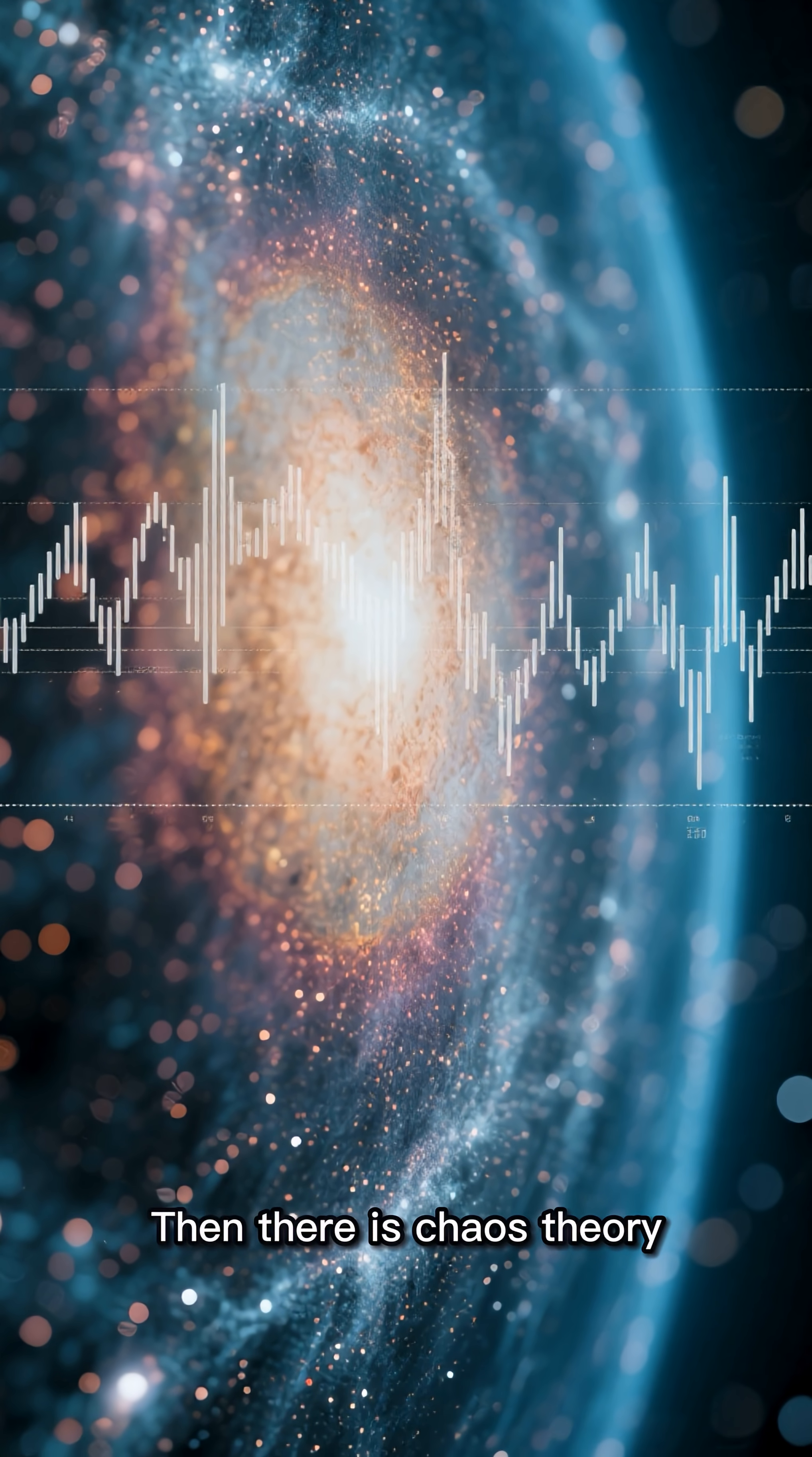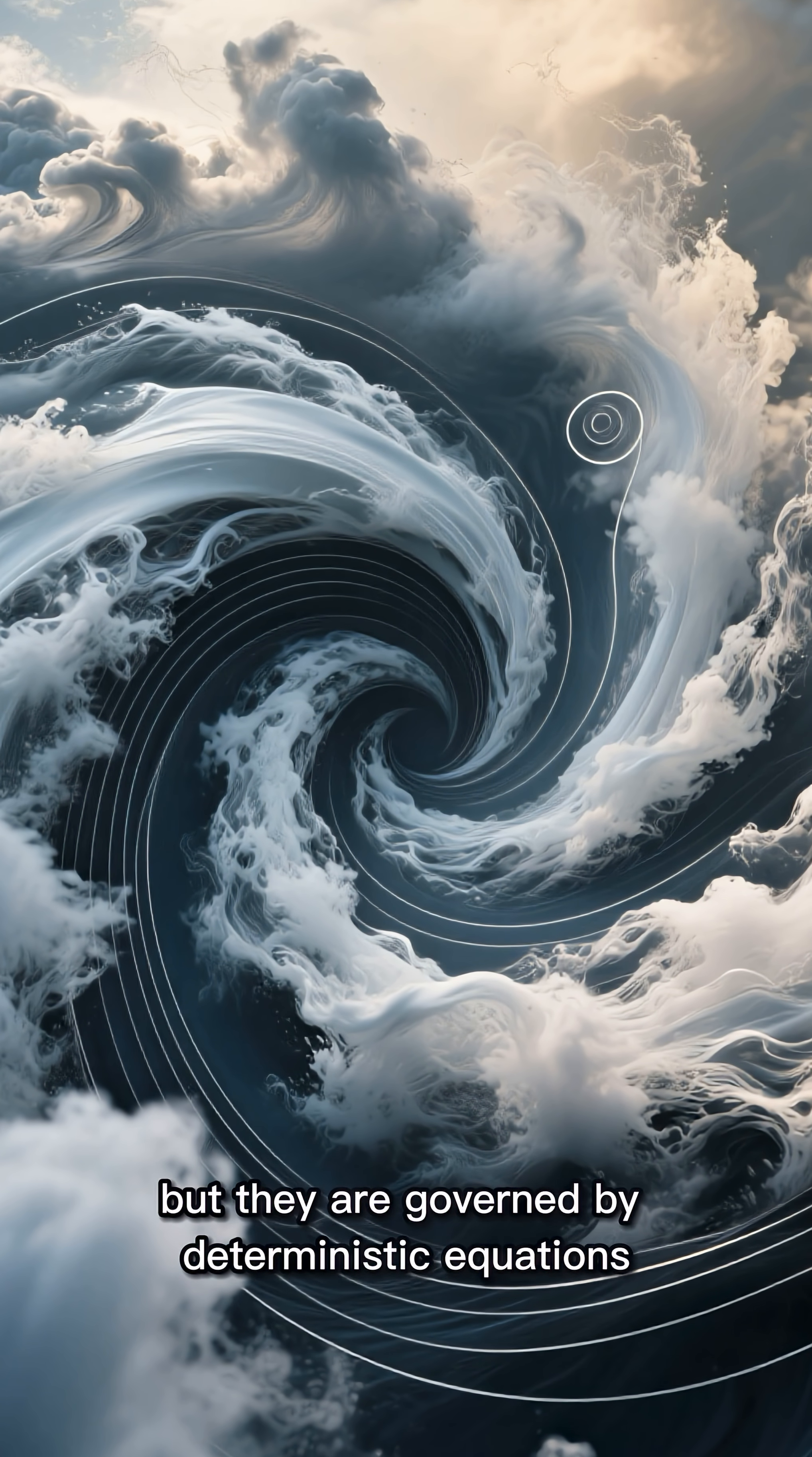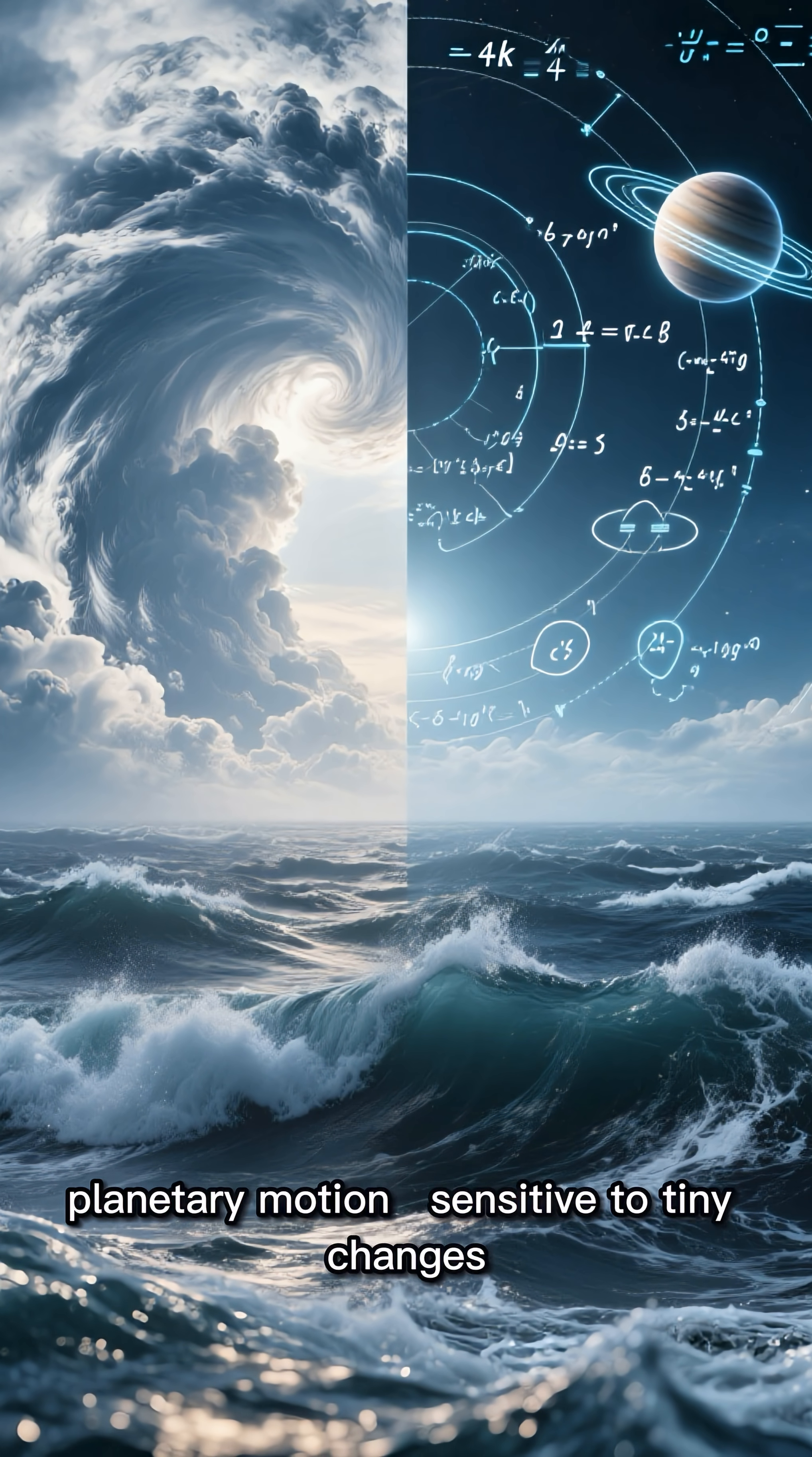Then there is chaos theory. Chaotic systems look unpredictable, but they are governed by deterministic equations. Weather, turbulence, planetary motion. Sensitive to tiny changes, but never lawless.